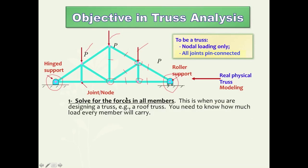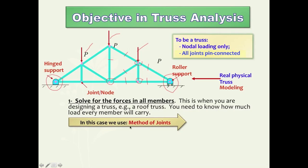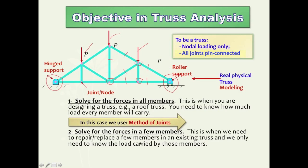There are two approaches for truss analysis, depending on the objectives. The first is when we solve for forces in all members — usually the case when designing a truss from scratch, such as a roof truss. This approach is called the method of joints. However, when you have an existing truss and are only interested in finding forces in a few specific members — for instance, members that have deteriorated and need replacement — you don't need to analyze all member forces. This approach is called the method of sections.